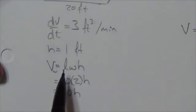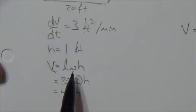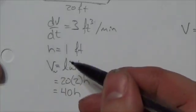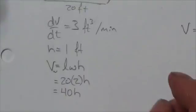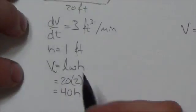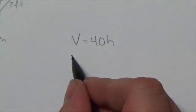This is a great question for highlighting when you substitute the values of variables in. This looked like there were four variables here: volume, length, width, and height. It turned out though length and width are both constant, and because they're constant, we can plug those in before we take the derivative.